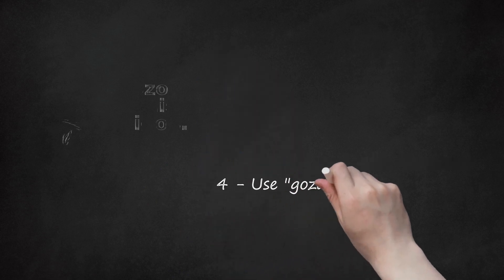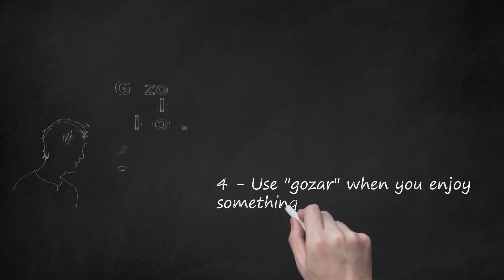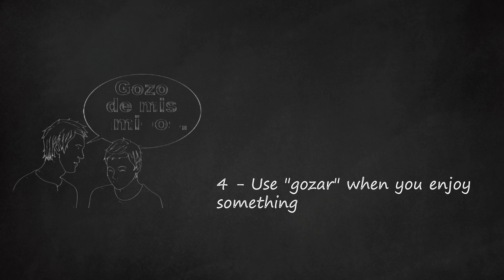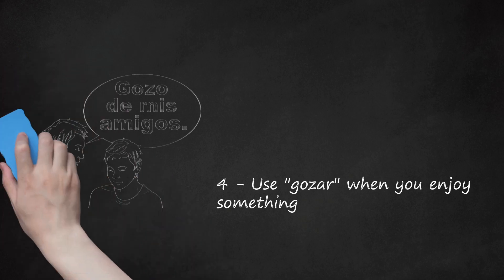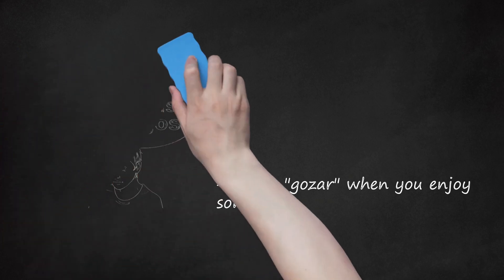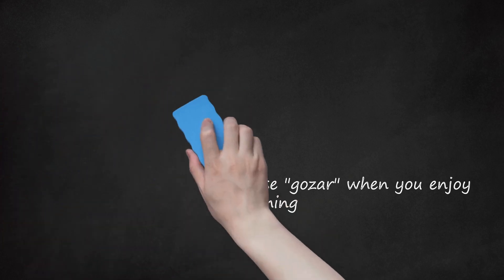4. Use 'gozar' when you enjoy something. When you're having fun with something or enjoying it, refer to that action using this verb. Pronunciation: go-zar de. The standard rules of conjugation apply, but you'll need to follow this verb with the preposition 'de' before introducing the noun being enjoyed. Example: 'Gozo de mis amigos' — I enjoy my friends.